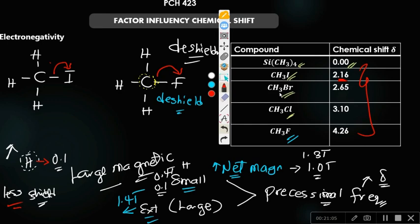So that's the idea of shielding and deshielding. If they ask you to compare CH3I and CH3F, CH3F will have a higher chemical shift value — around 4.26 — because it is deshielded more by the electronegative fluorine atom, compared to iodine which deshields less. That is the rationale behind shielding and deshielding. Thank you very much for your time. We'll see you in the next one.